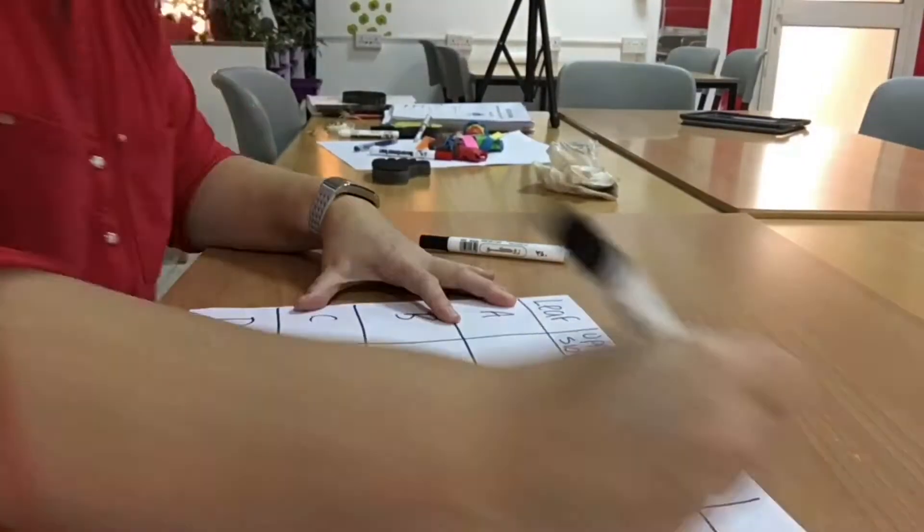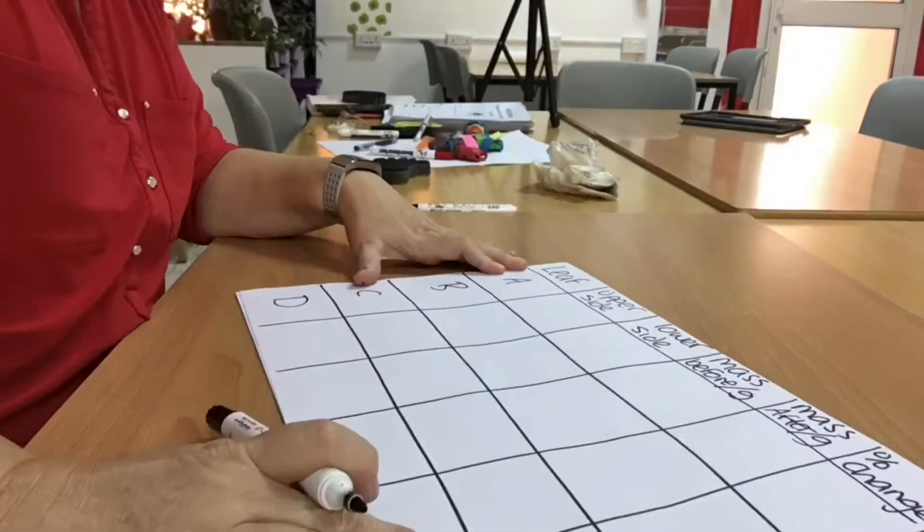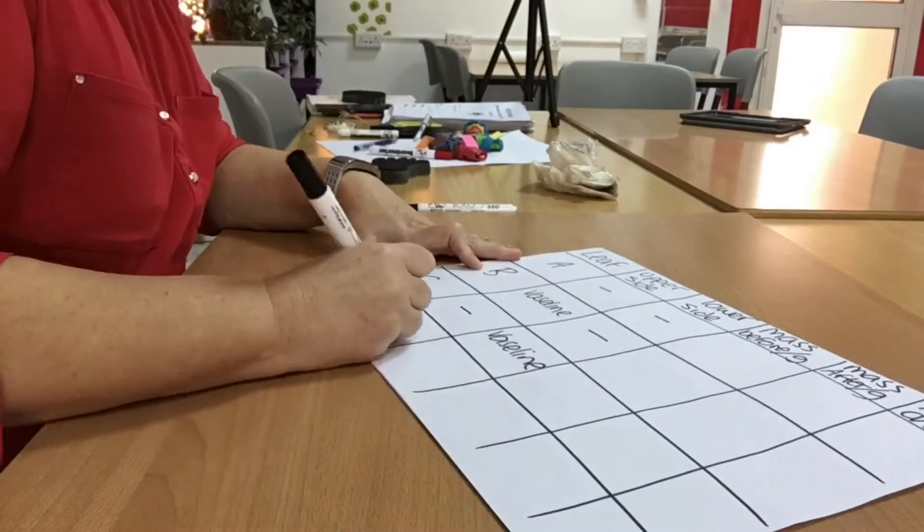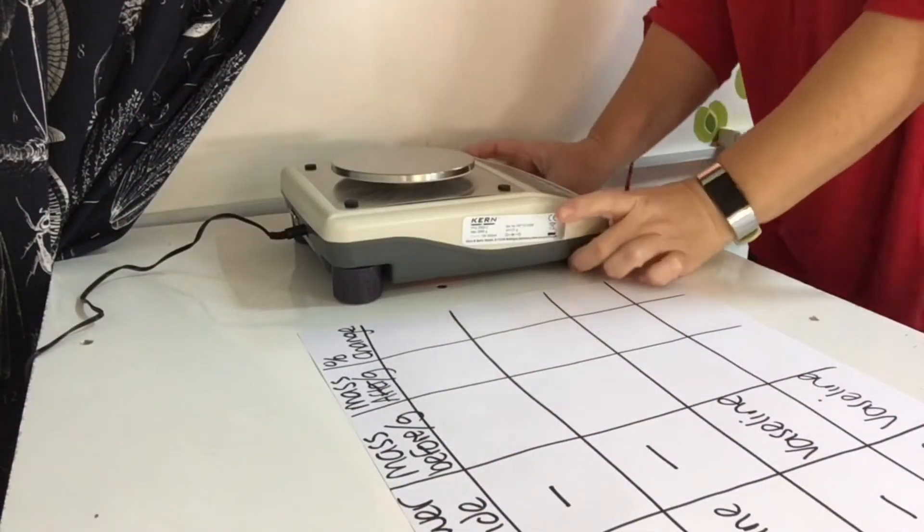Here's the table I made earlier. I'm recording which side I'm putting Vaseline on, then I'm going to weigh them. It's important that I keep my leaves in order and make sure I know which leaf is which.